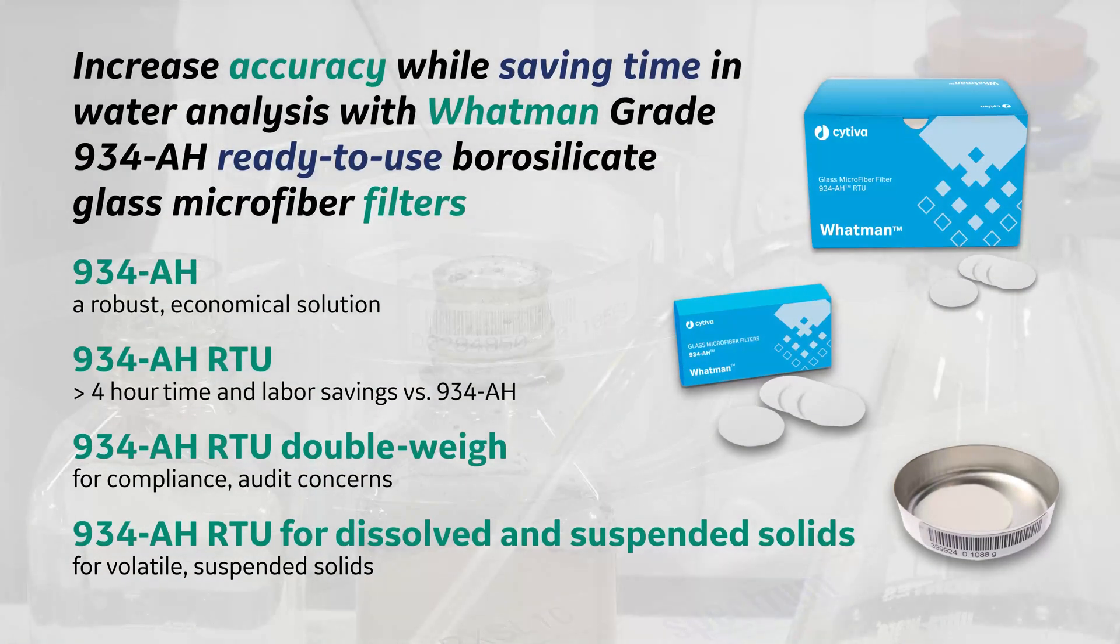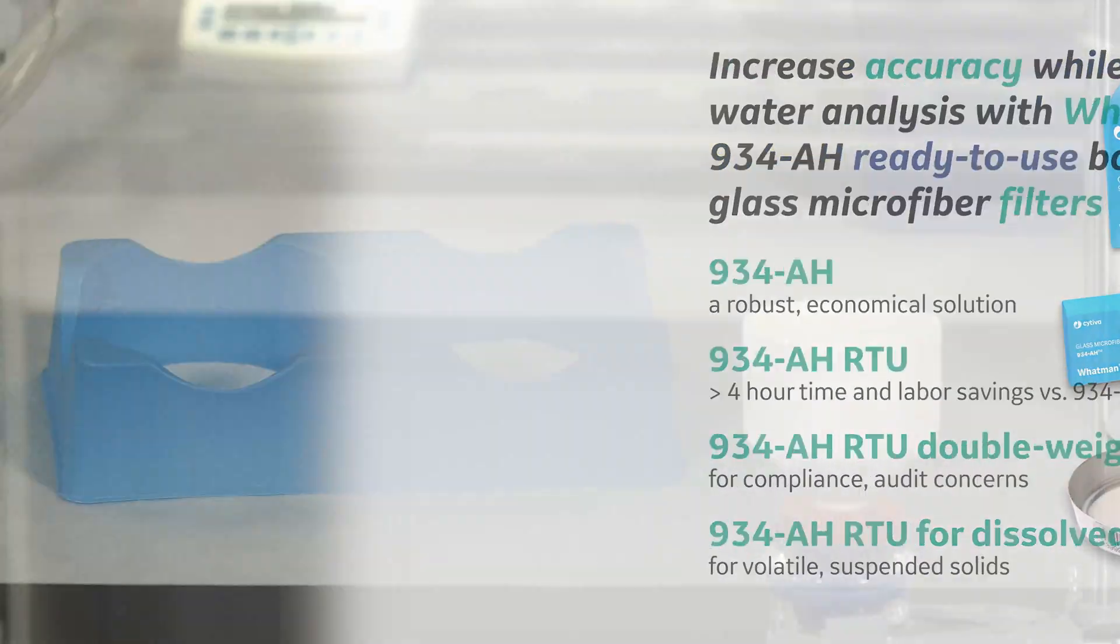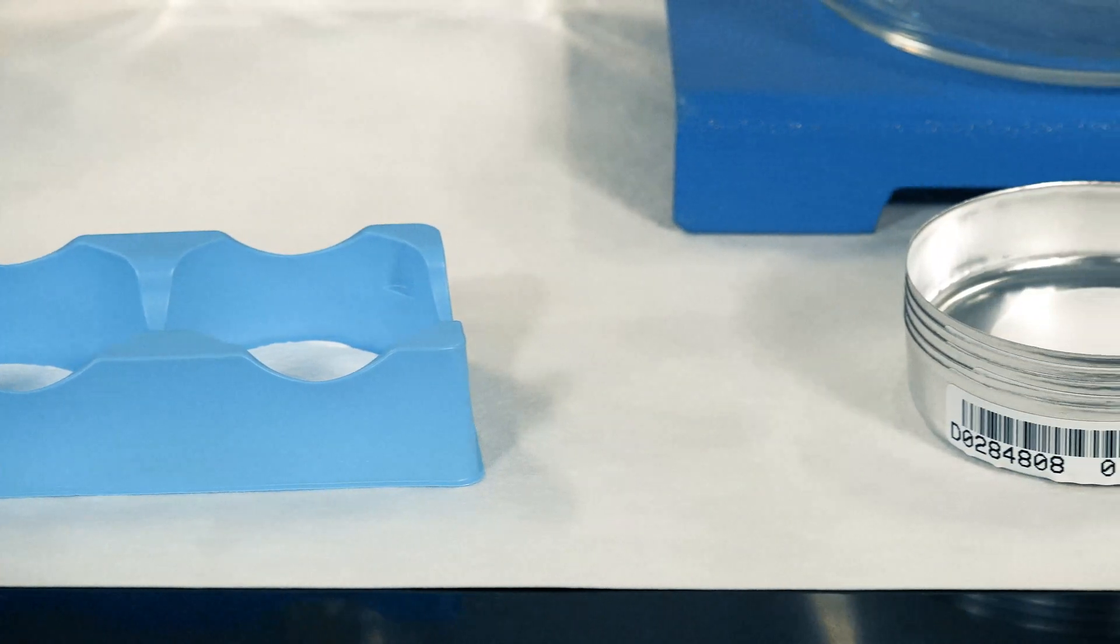Cytiva offers several versions of the 934 series of glass microfiber filter papers to best fit your analysis needs. Cytiva also offers a double-weighted version of the 934AH that removes the first weighing step, allowing you to work even faster.